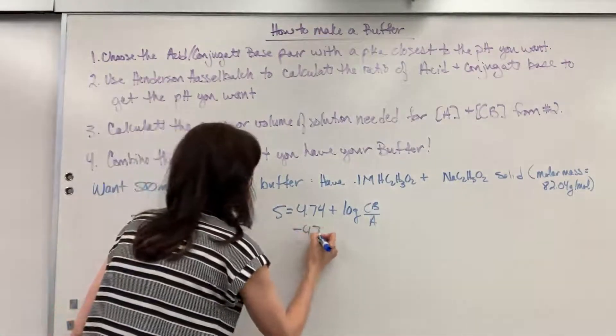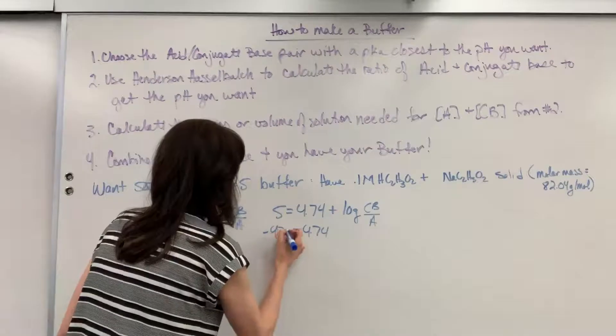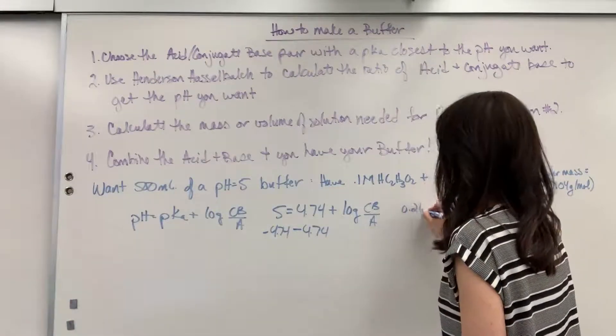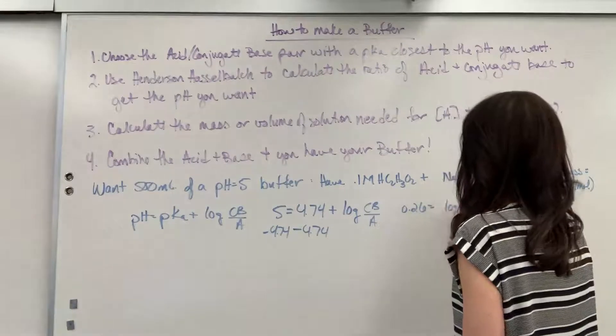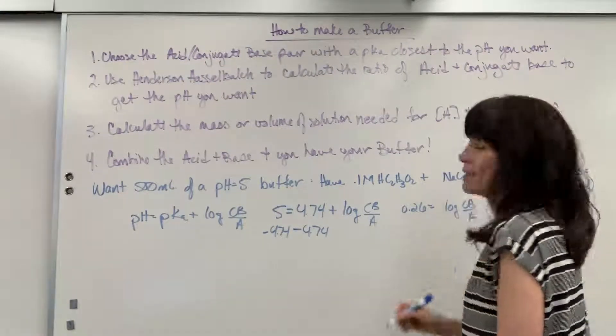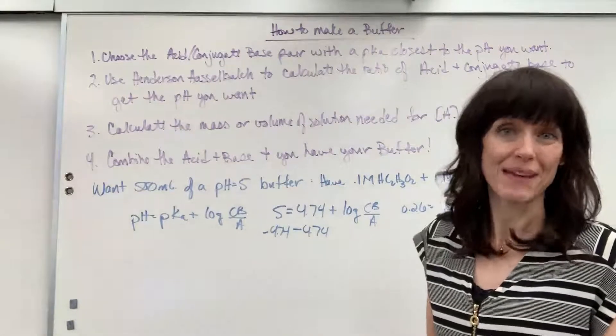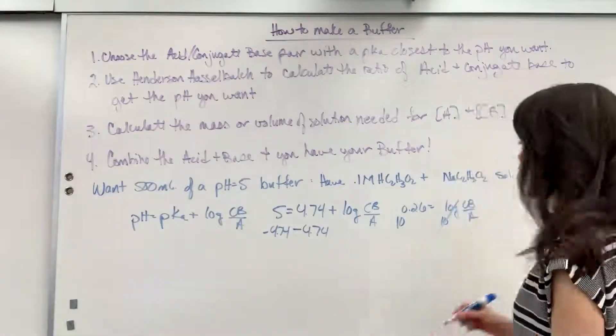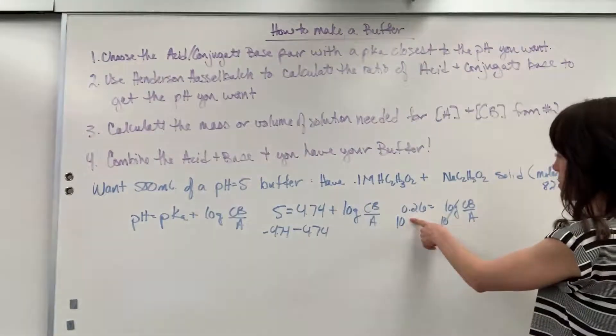Let's go ahead and subtract 4.74 from both sides, and we are going to get 0.26 equals log of conjugate base over acid. Now, how do I get rid of a log? Base 10. So I raise both of these to base 10. That's going to undo my log, and we get 10 to the 0.26.